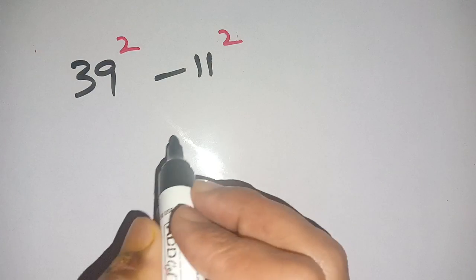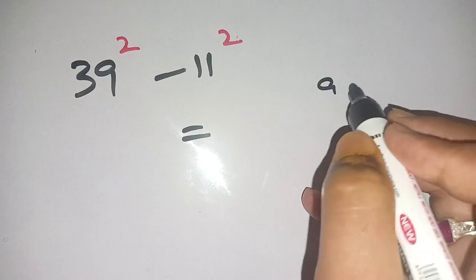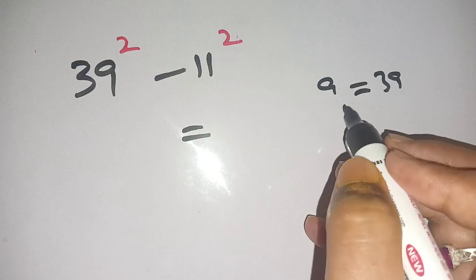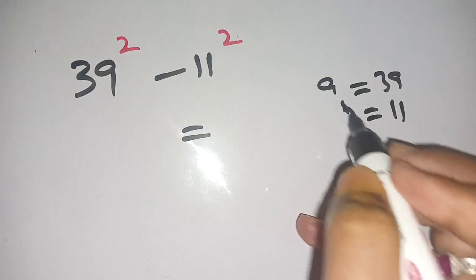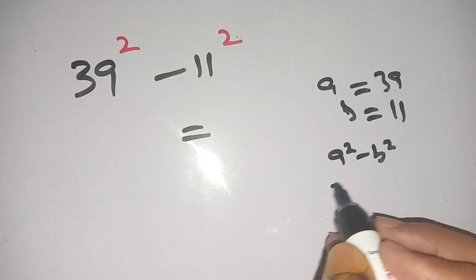Let us solve this. We can write this as 39 squared minus 11 squared. Consider that a is equal to 39 and b is equal to 11. It is in the form of a squared minus b squared.